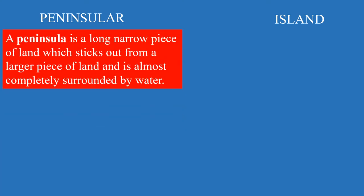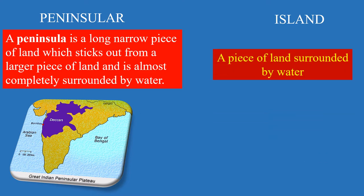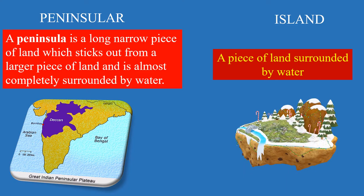Before explaining this concept, we should know the difference between a Peninsula and an Island. A Peninsula is a long narrow piece of land which sticks out from a larger piece of land and is almost completely surrounded by water. India is a Peninsula — Arabian Sea to the west, Indian Ocean to the south, Bay of Bengal to the east. An Island is a piece of land surrounded by water on all four sides, for example Sri Lanka.